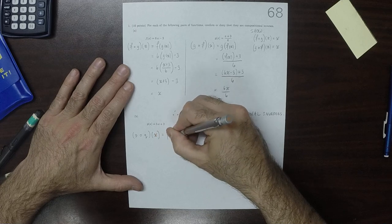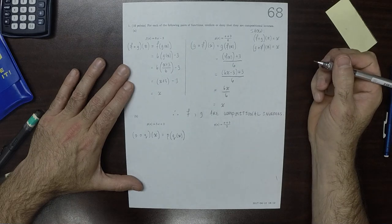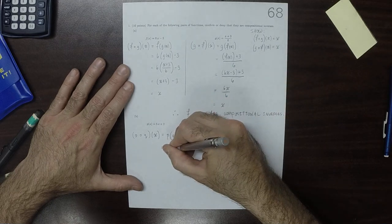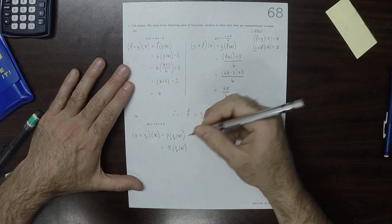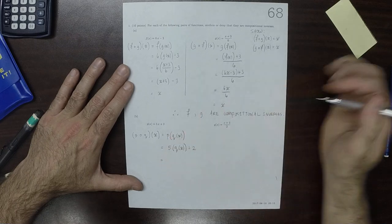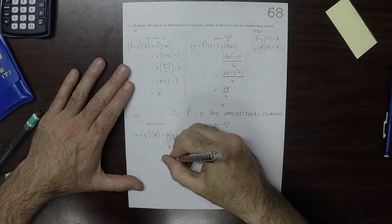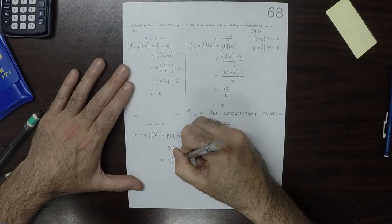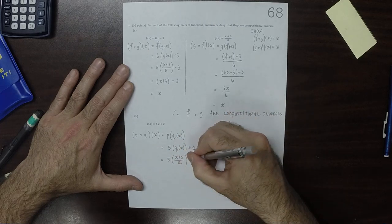Well, that's p of q of x and that is 5 q of x plus 2. And that is 5 x plus 5 over 2 plus 2.